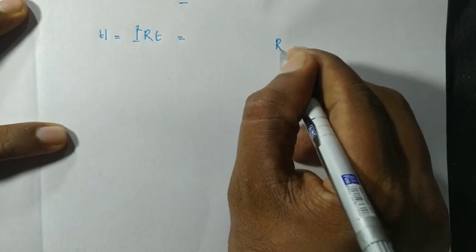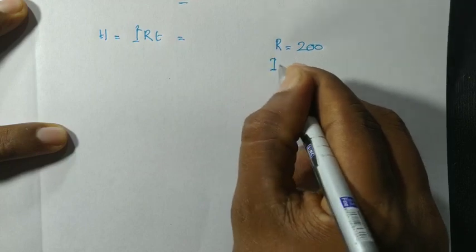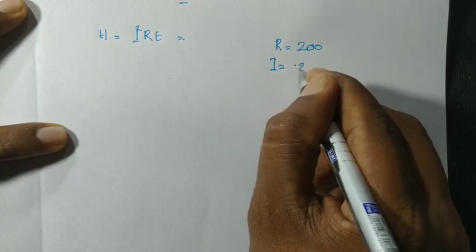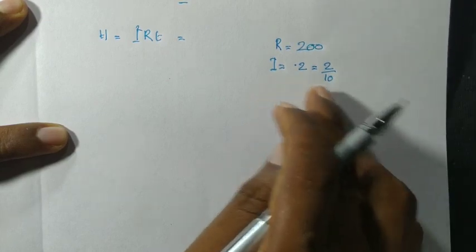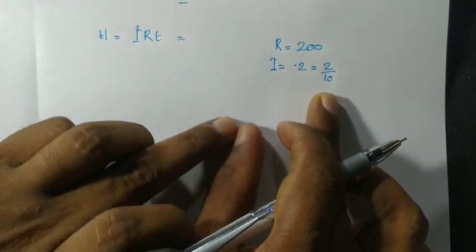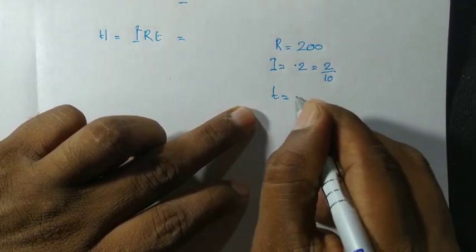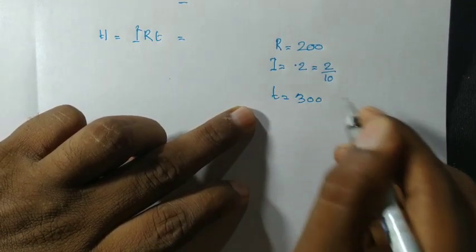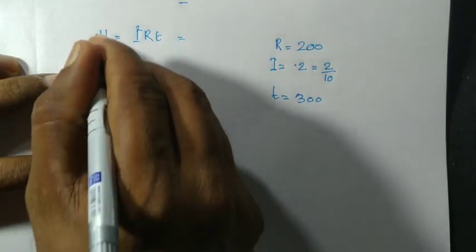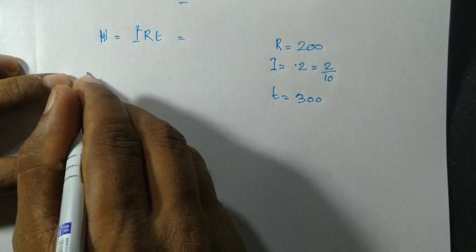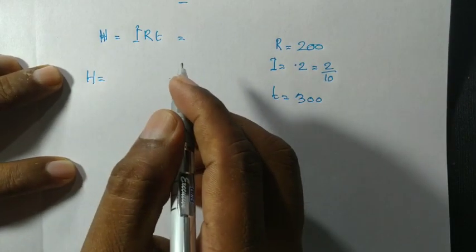R is equal to 200, I is equal to 0.2, that is equal to 2 by 10. The formula is H equal to I squared R T.